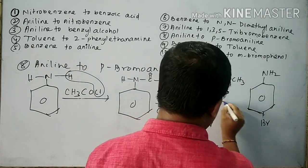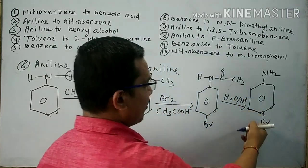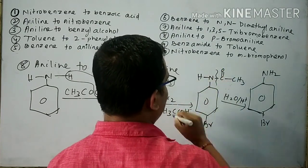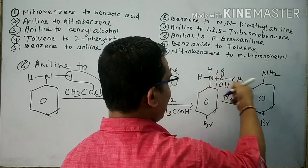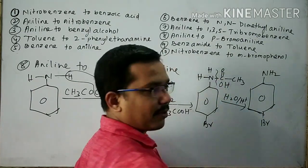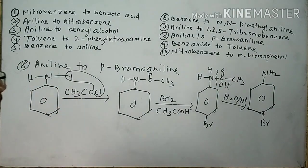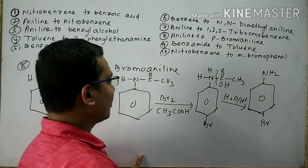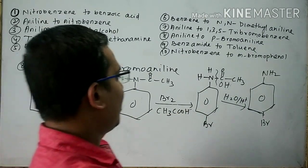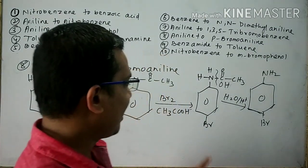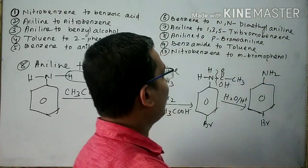Para-bromoacetanilide is subjected to acid hydrolysis. A hydrogen atom is given to the nitrogen atom, and acetic acid is formed as a byproduct. As a result, para-bromoaniline is formed. To repeat: aniline reacts with acetyl chloride to form acetanilide. Acetanilide reacts with bromine in acetic acid to form para-bromoacetanilide. Para-bromoacetanilide undergoes acid hydrolysis to give para-bromoaniline.